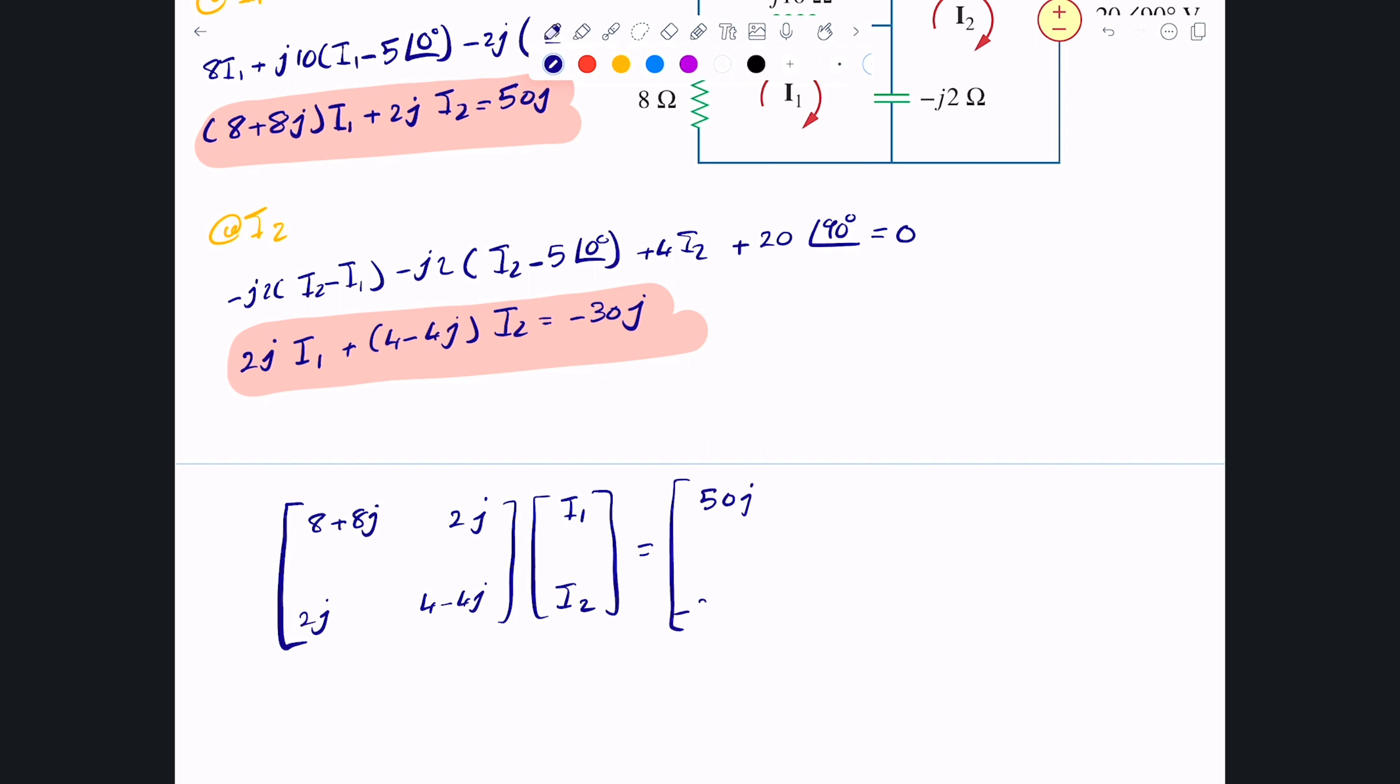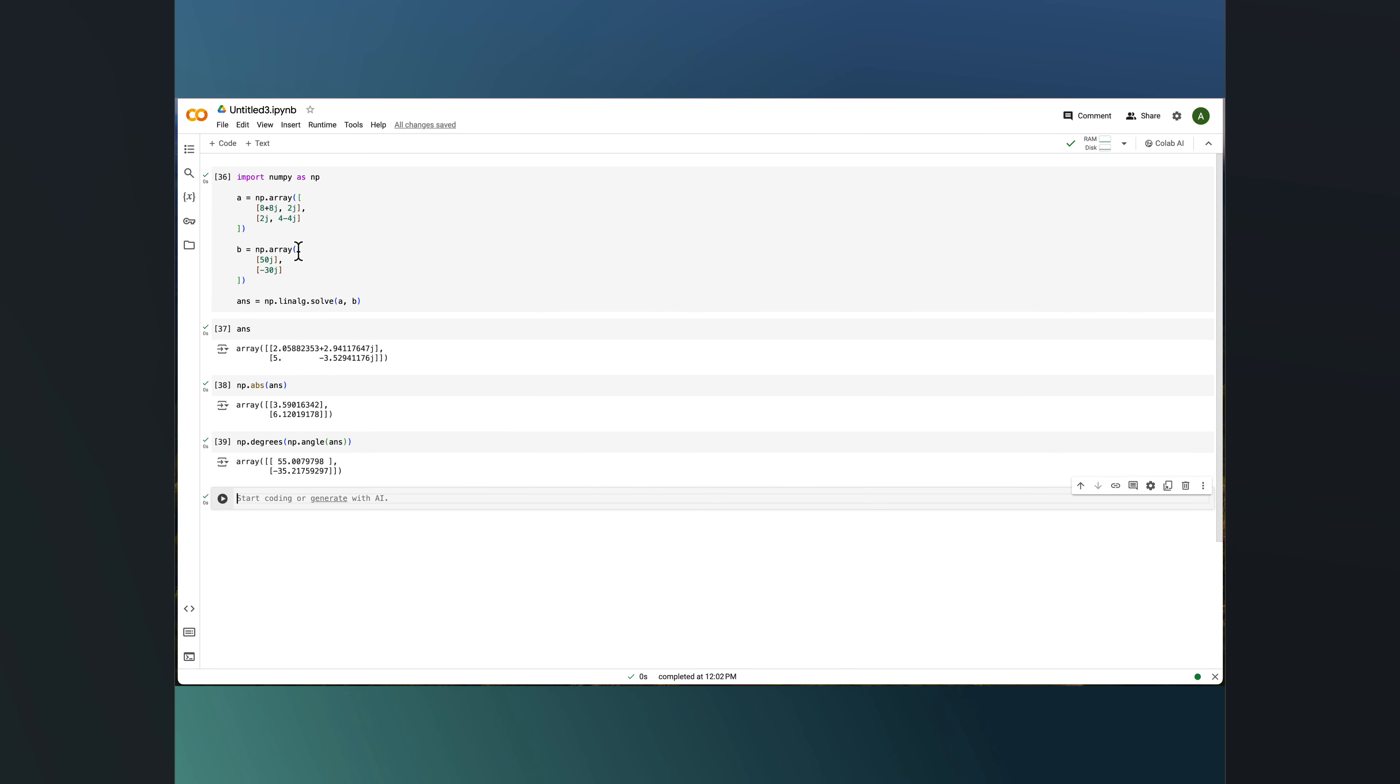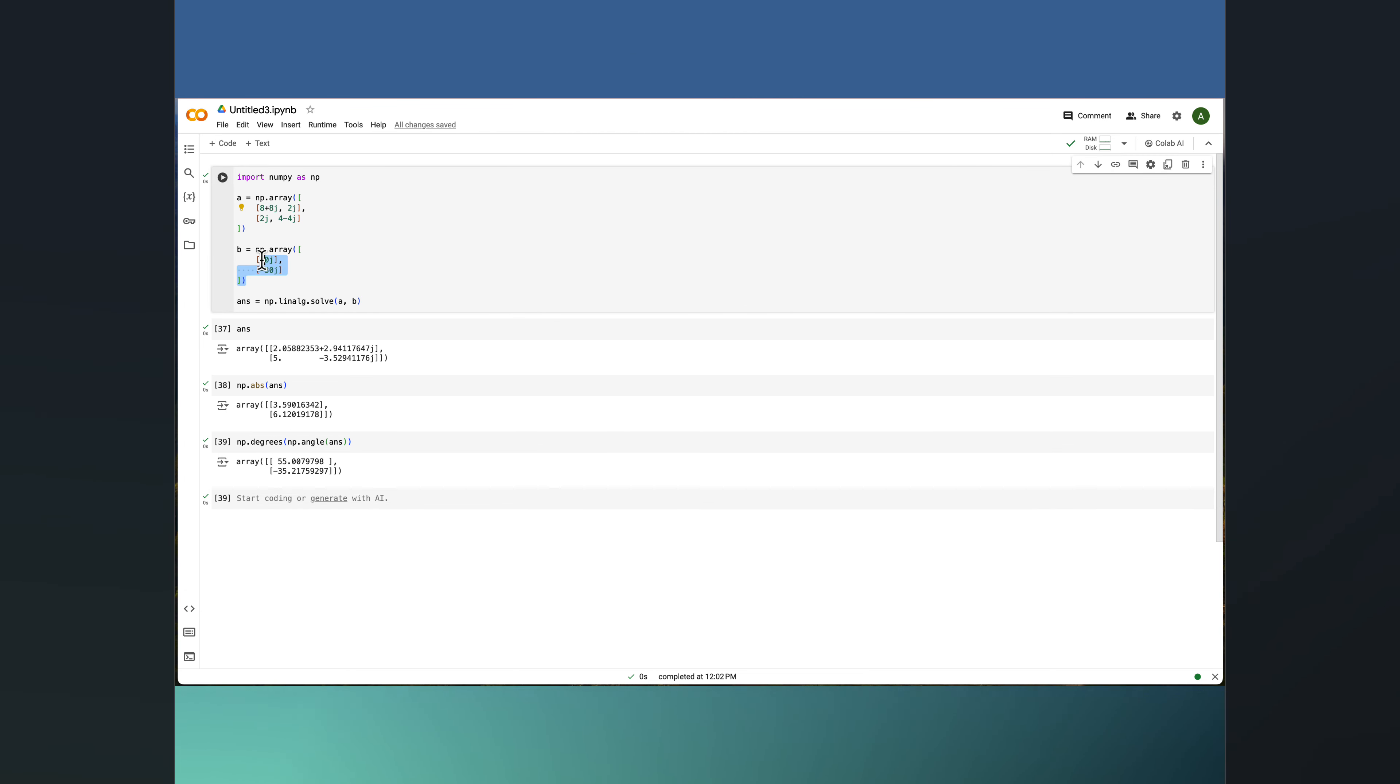I went ahead and I updated the matrices, this is A, this is B, and I got the solution. The solution in rectangular format is this way. I just wanted to show you we can get the magnitudes of these complex numbers and the phase this way. For example what we have is I've stored the answer in a matrix called answer and it has this is basically my I1 and this is my I2.